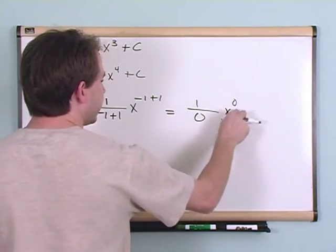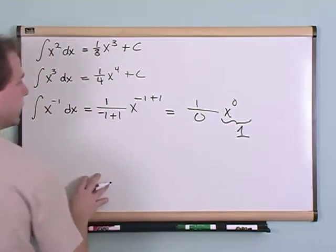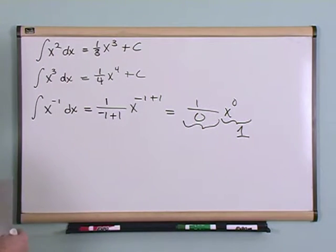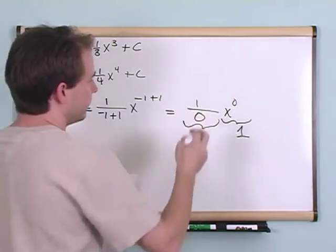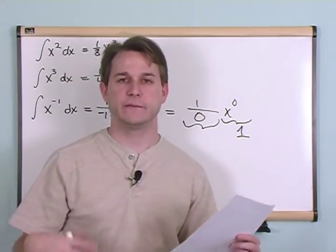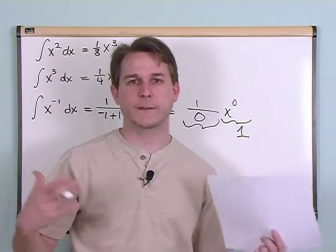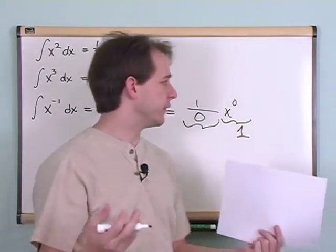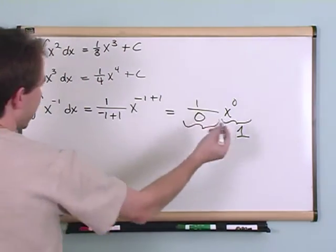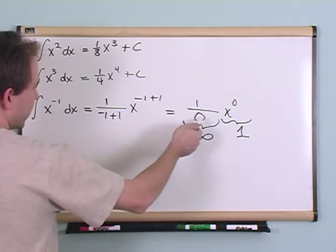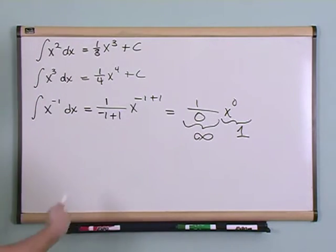Well, anything to the 0 power is 1. Well, what does this part mean? 1 over 0. What does that mean? Well, in other math classes that you may have had, you might have learned that anything over 0 is undefined. Well, when you start to get into calculus and start talking about limits, you're going to start to realize that when something's divided by 0, it's really infinity. In other words, 0 can go into any number an infinite number of times. You can divide nothing into something a whole bunch of times, an infinite number of times.